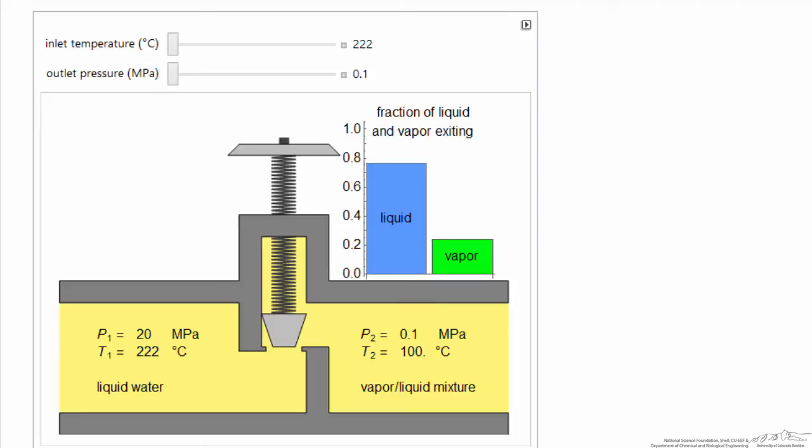This bar graph shows the relative fractions of liquid and vapor. We can change the inlet temperature, and it still remains a liquid. As I change the inlet temperature, because the outlet pressure is fixed, the outlet temperature doesn't change, but notice we get more and more vapor leaving as the energy at the inlet increases. Remember, the energy balance for a throttle is the enthalpy coming in equals the enthalpy leaving.